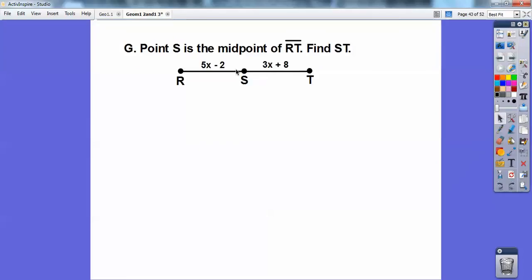All right, so point S is the midpoint. If that's the midpoint of segment RT, find ST. So they want me to find this length right here. If this is the midpoint, then this side equals this side. So set those expressions equal to each other. 5X minus 2 equals 3X plus 8. So what I did is I subtracted 3X from both sides, and I plused 2 to both sides. Can you see where I get 5X minus 3X is 2X? And then I added 2 to get rid of that negative 2. 8 plus 2 is 10. So X equals 5.